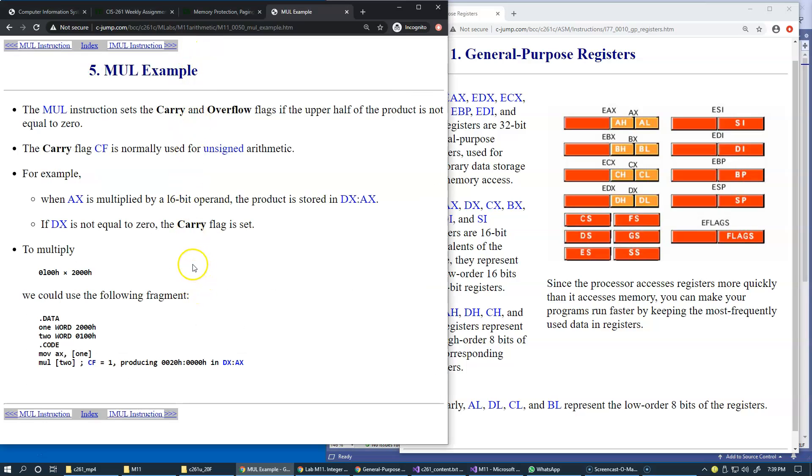Here's an example of using multiplication instruction. In general, multiplication instruction sets the carry and overflow flags if the upper half of the product is not equal to zero. So if we multiply EAX by EDX and the result overflows into 64-bit upper half which will be in register EDX, then both of these flags will be set.